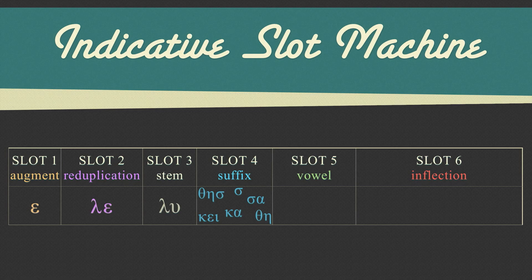Slot five is a connecting vowel, also called a thematic vowel. Some tense and voice combinations have the connecting vowel. Some don't.